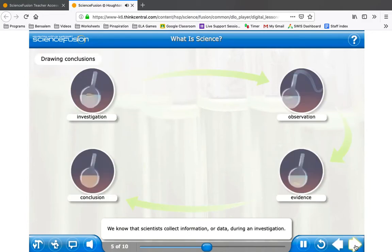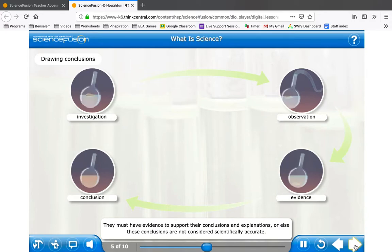We know that scientists collect information or data during an investigation. But what do they do with it? Scientists analyze data to draw conclusions or provide explanations about the thing or process they are investigating. They must have evidence to support their conclusions or else these conclusions are not considered scientifically accurate.